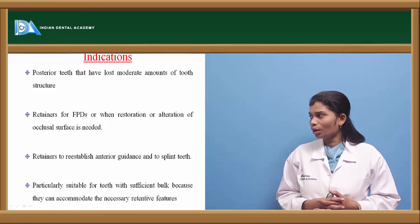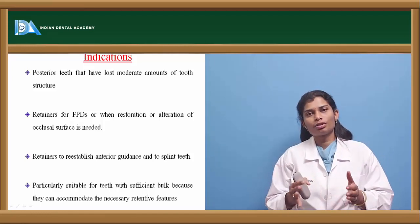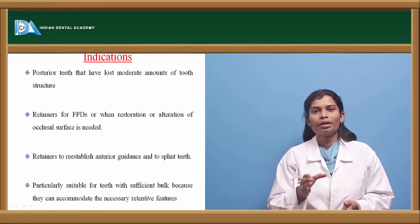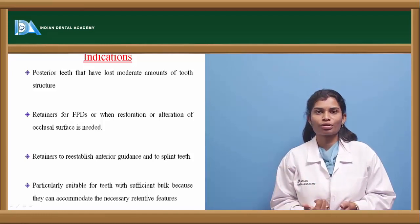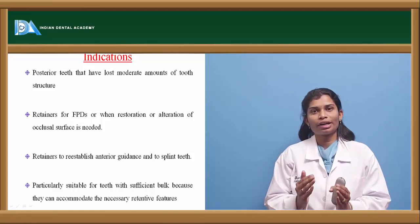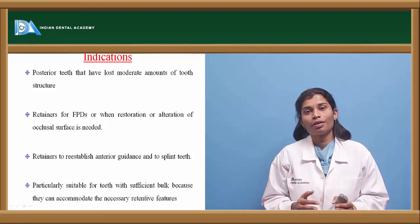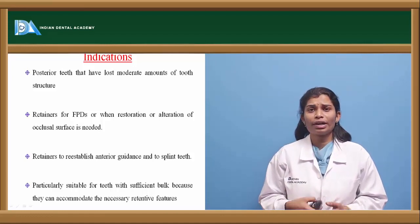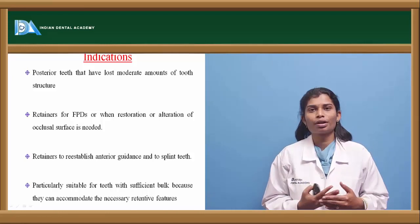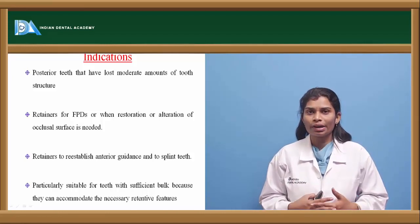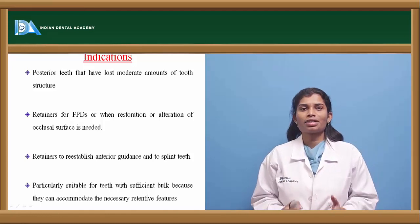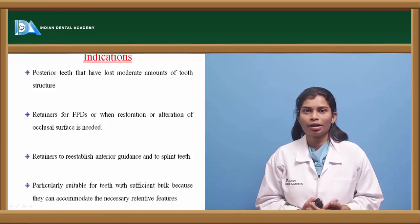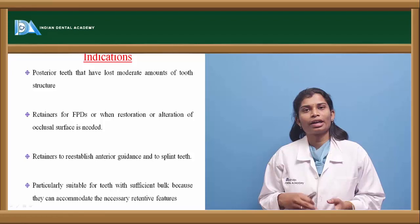In cases where a tooth has a good amount of remaining dentin structure and minimal reduction can help achieve good retention, if the tooth can support retentive features like boxes or grooves, you can go ahead with a partial veneer crown. If retention would be compromised by such features, it is better to go with a full veneer crown. This is all dependent on the amount of remaining tooth structure after any pre-existing restoration, decay, or fracture.